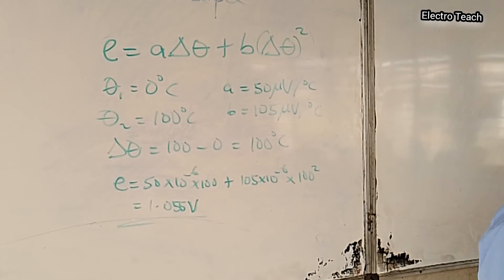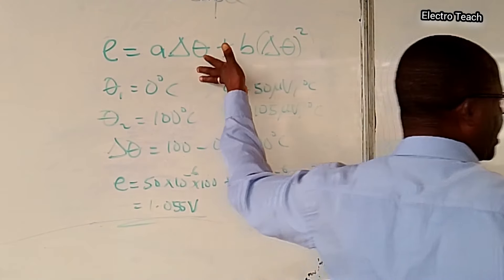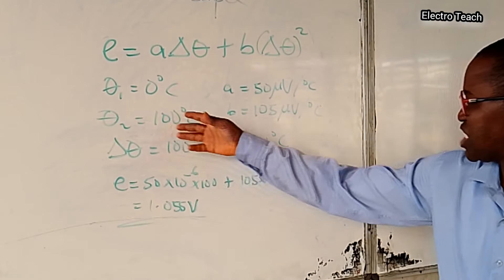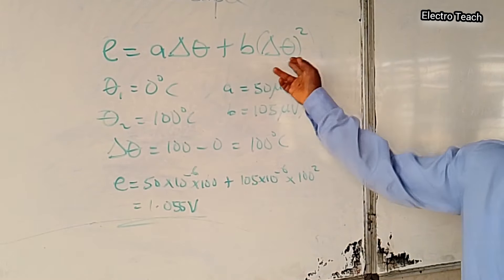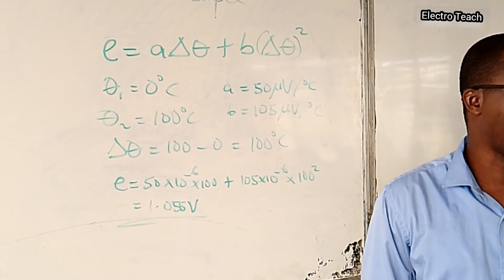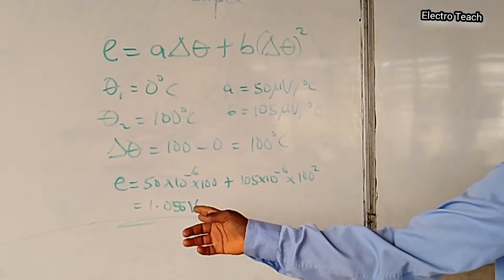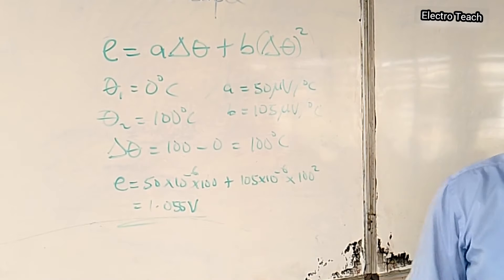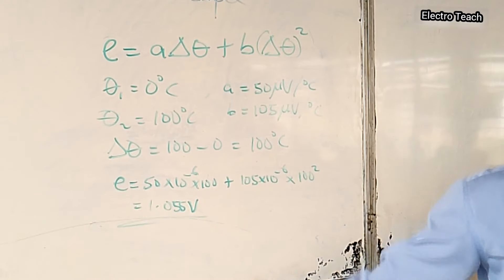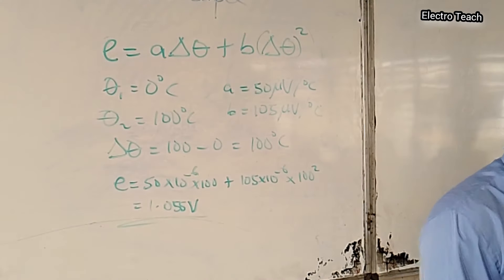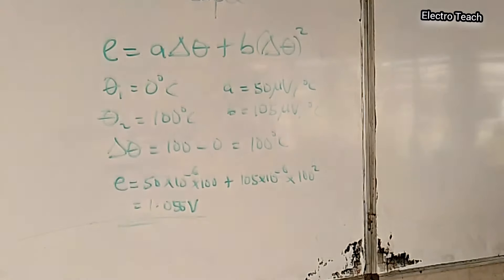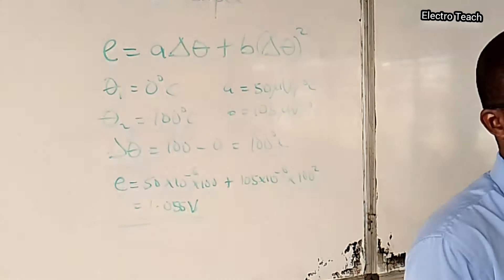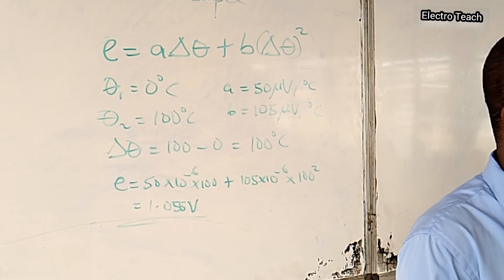Now, the only thing is that when we are testing you, we might not give you the direct question like this. We might give you the other parameters and ask you to calculate the change in temperature for instance. In that case, you are going to form a quadratic equation, because this is quadratic, the term is squared. So if we give you other parameters and say determine the change in temperature, use your mathematical knowledge and play around it and get the values out. If you check the past questions, you will see something like that.